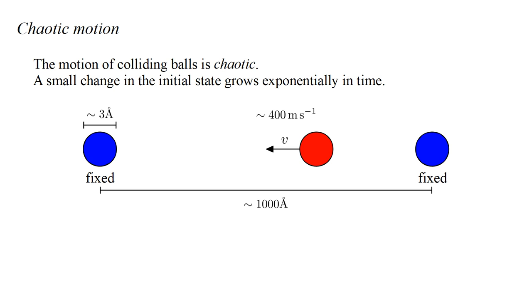To represent gas molecules, we'll use some of the order of magnitude values we've developed so far. The balls are about three angstroms in diameter, about 1,000 angstroms apart, and the red ball travels at about 400 meters per second. The time between collisions is the distance between the fixed balls divided by the speed of the red ball, about 2.5 times 10 to the minus 10 seconds. The inverse of this, about 4 billion, is the number of collisions per second. An atmospheric gas molecule, under typical conditions, undergoes billions of collisions per second.